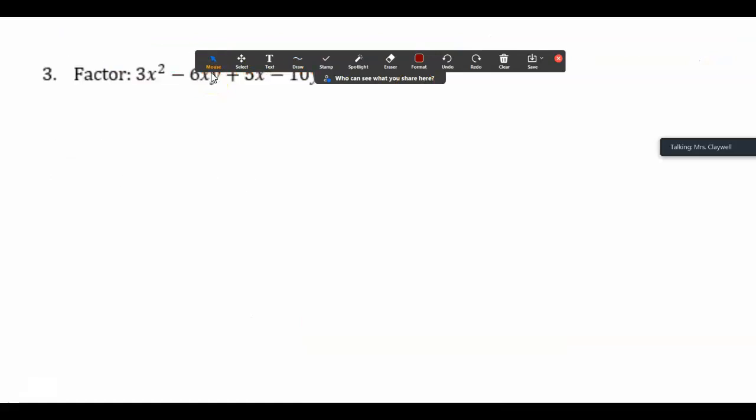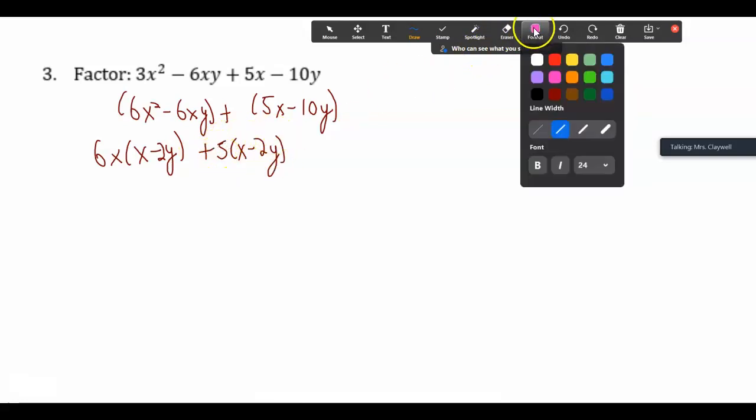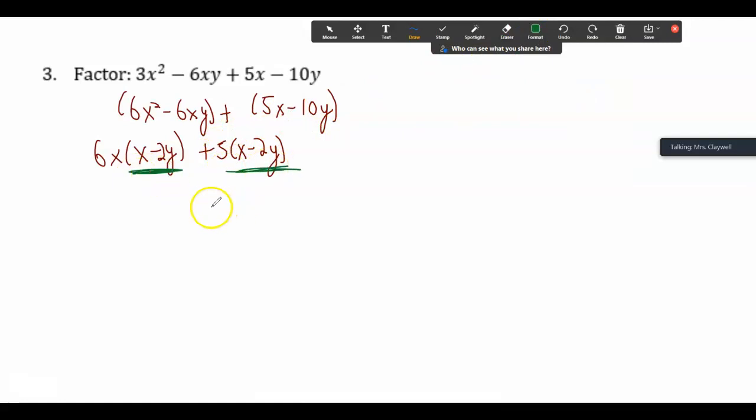We're going to jump down and do example three first. For step one, do these all have a greatest common factor? They do not. So I'm going to group the first two and the second two. Then I'm going to look, do these have anything in common? The first have a 6X, so I can pull out and that becomes X minus Y. Here, these have a 5 in common, so I can factor out X minus 2Y again. Our critical thing here is that we got matching pairs.